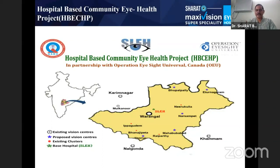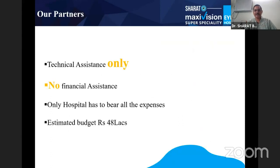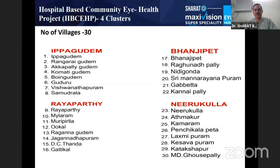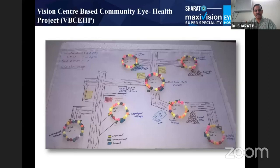We realized about 9 to 10 percent of patients were diabetics, so we started doing diabetes screening. Diabetic patients were grouped separately. We took the help of Operation Eyesight Universal — they provided technical assistance and training for the girls, with no direct financial assistance, though the estimated budget was 48 lakhs. We then expanded into 14 more villages connected to a local farmer cooperative bank.